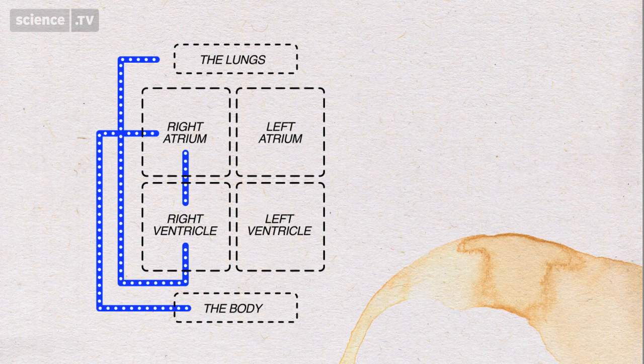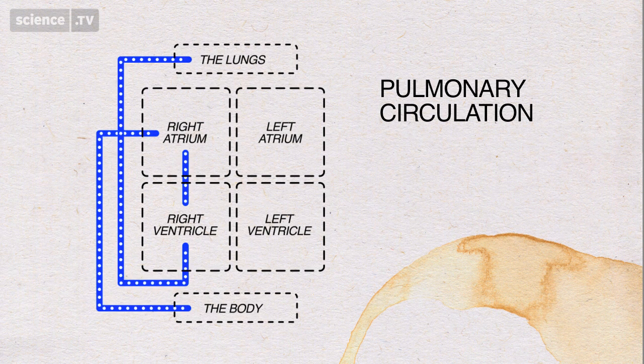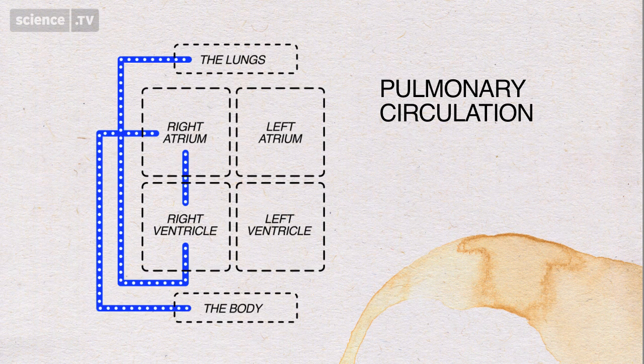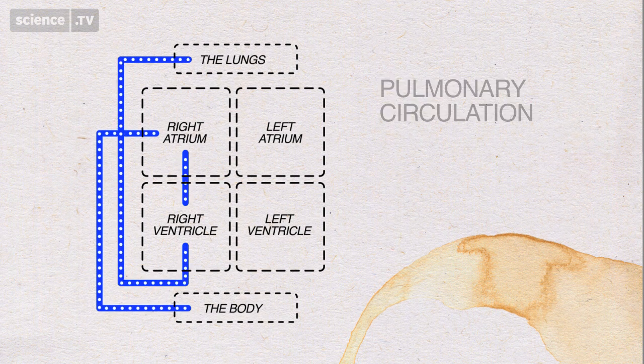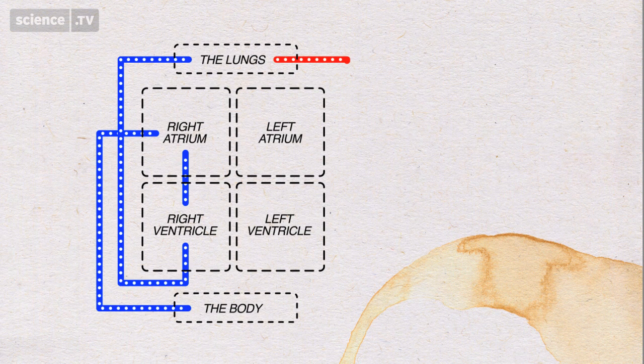This bit's called the pulmonary circulation. Pulmonary is just a fancy word for something to do with the lungs. Now the blood comes back to the heart all perky and full of oxygen into the left atrium.